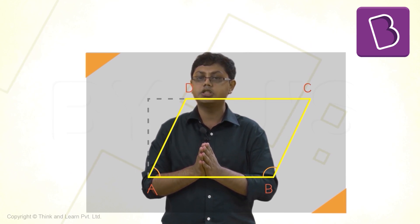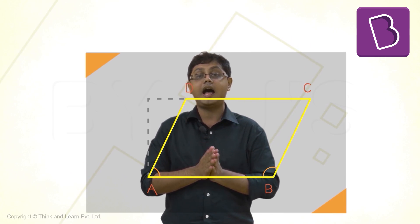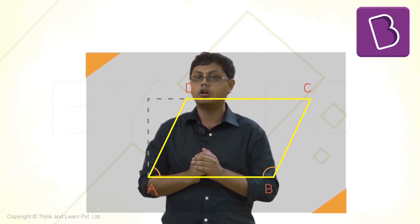Will the perimeter of this parallelogram be the same as the rectangle that we saw before? Yes or no?